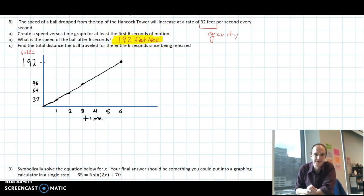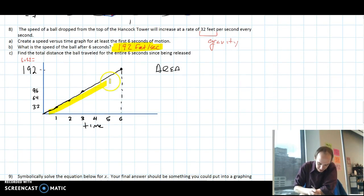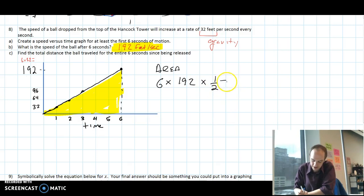Now we're going to find the total distance that the ball traveled during this time. There's a lot of ways to do this problem. Here are two of my favorites. The first way is to find the area under the curve. It's a straight line, but we use the word curve in math to be very general. So the area under this thing. Well, this is a triangle. So we're going to do 6 times 192 times 1 half, because the area of a triangle is base times height times 1 half. And that ends up being 576 feet.